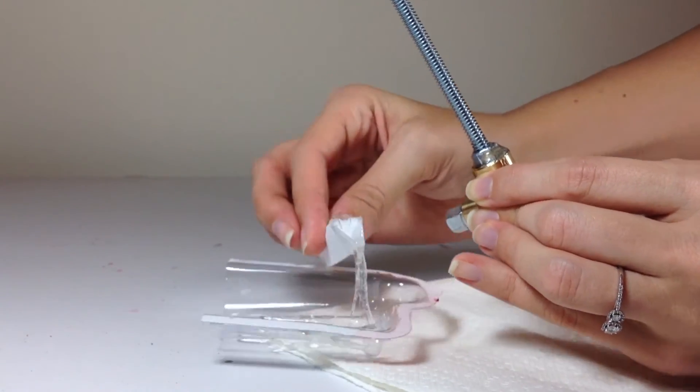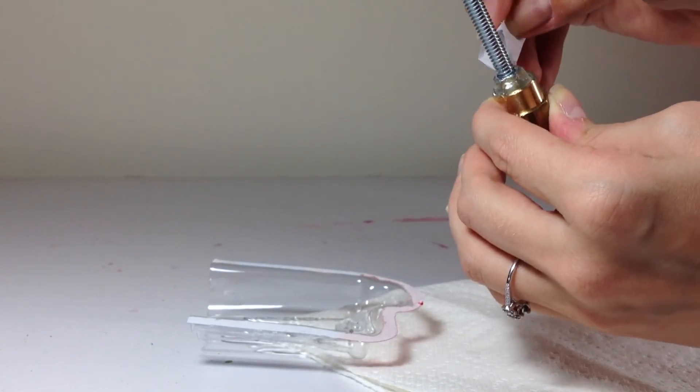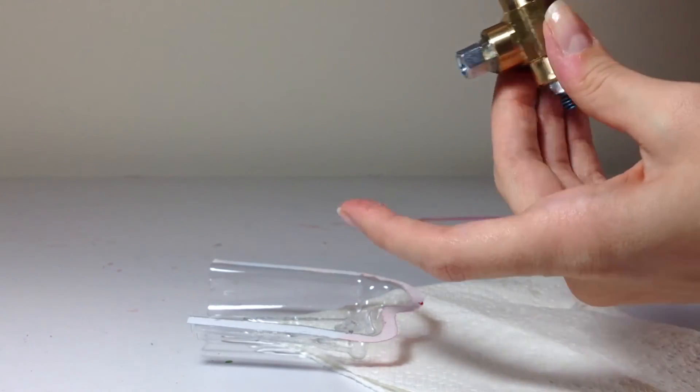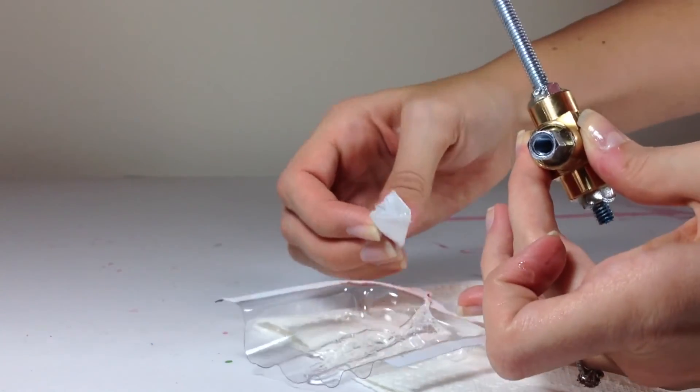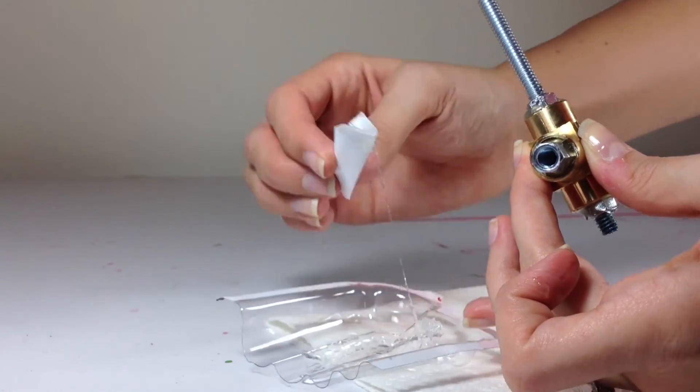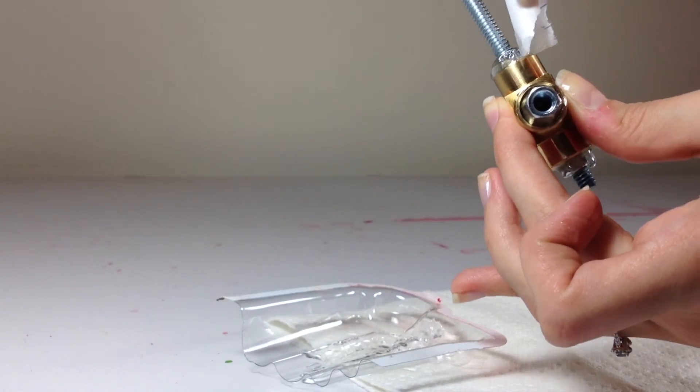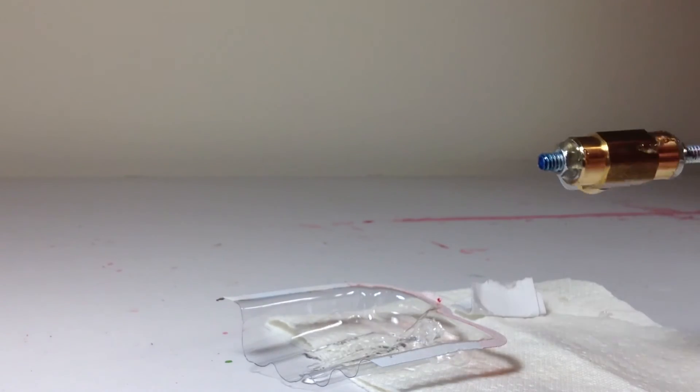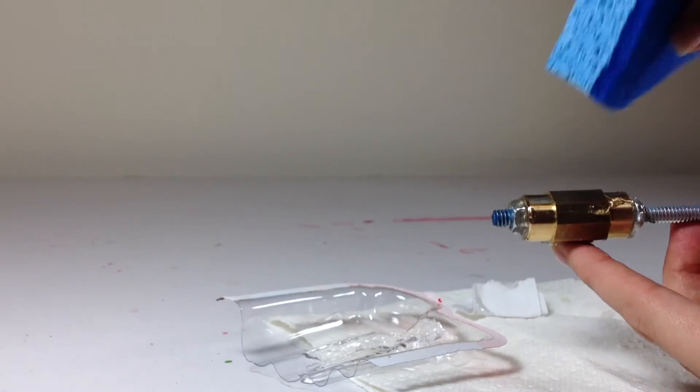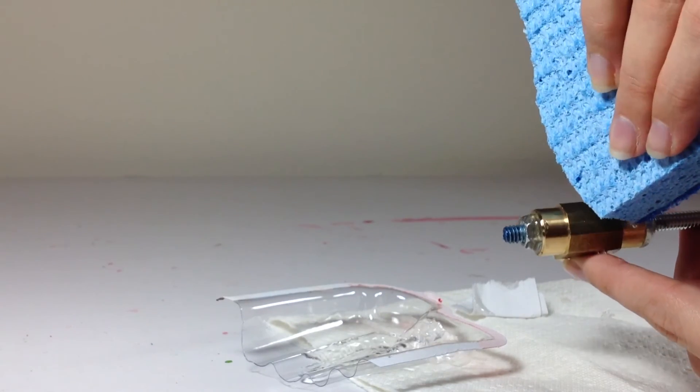If you get messy it's okay, that's what the sponge is for. So you can see it, it's already hardening up. And there you go, if you get messy just wipe it off with a sponge.